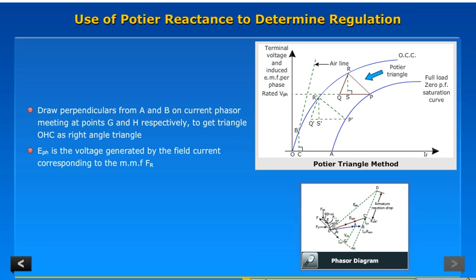EPH is the voltage generated by the field current corresponding to the MMF FR.